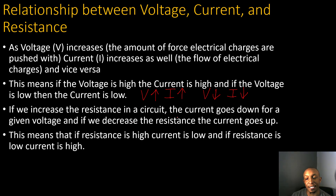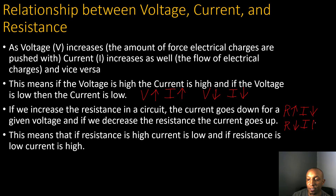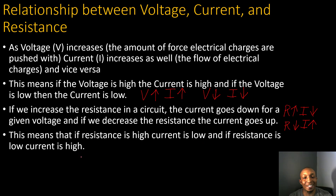If we increase the resistance in a circuit, the current goes down for a given voltage; if we decrease the resistance, the current goes up. So as resistance increases, current decreases, and as resistance decreases, current increases. This is an inverse relationship — as one goes up, the other goes down. Therefore, if resistance is high, current is low, and if resistance is low, current is high.